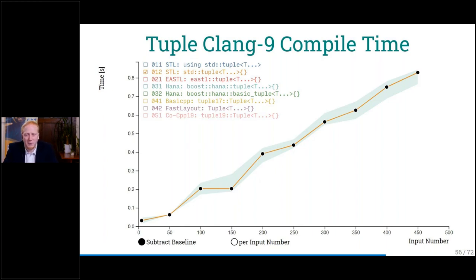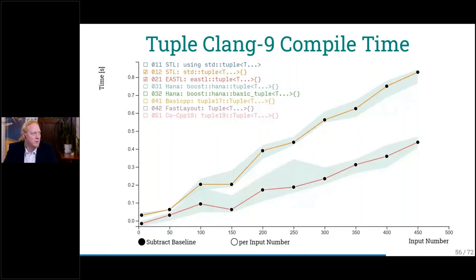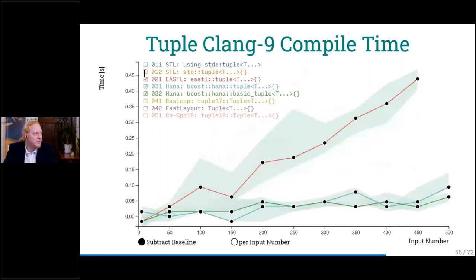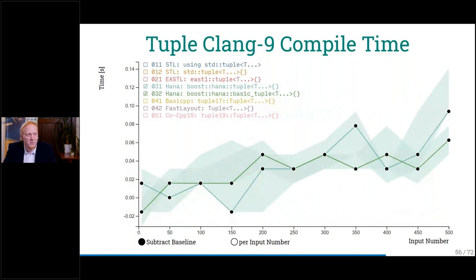It's also good to extend the range to see where the limit is and whether it's quadratic. For the standard tuple we get a certain result. Comparing to EASTL, it's about half — a lot faster. Looking at the HANA implementation — that is fast, almost not measurable. There's also a lighter version of Boost HANA, a basic tuple — if we use that, then it's faster again. We have to disable the slow parts to see: yeah, it's almost not measurable, a fixed step. Can we beat it? What's our own implementation?